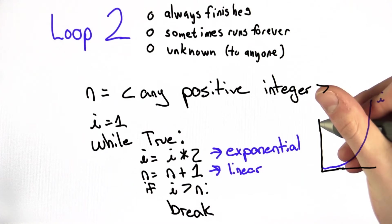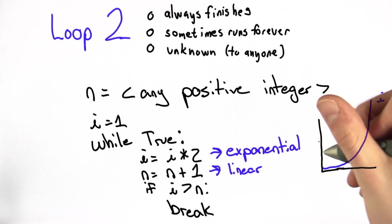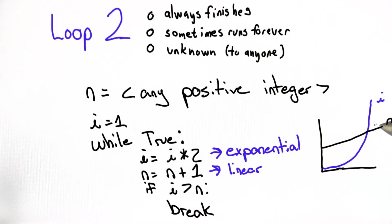n, however, can start at any positive integer. It can be anywhere on here. But we do know that it increases very slowly. In fact, it's guaranteed that eventually i will surpass n. I'll leave the mathematical proof to you, but you can take my word for it for now.